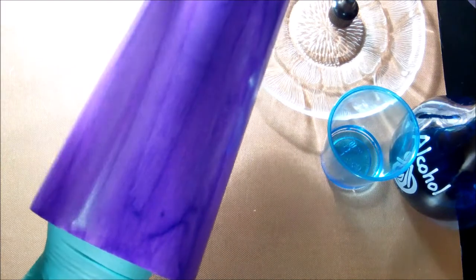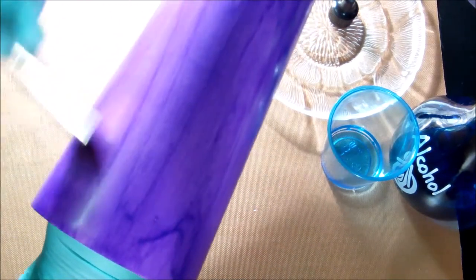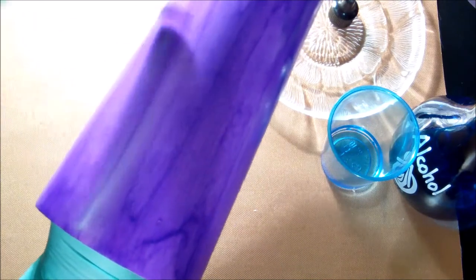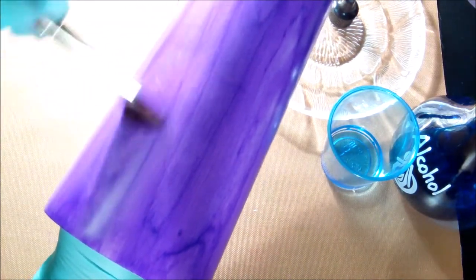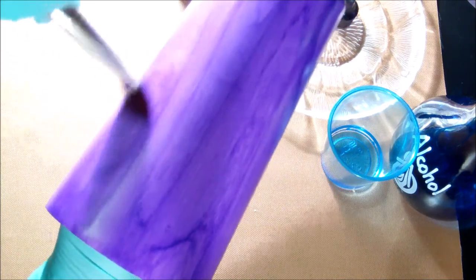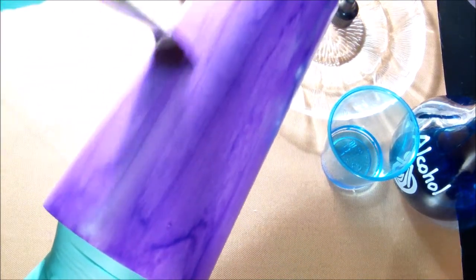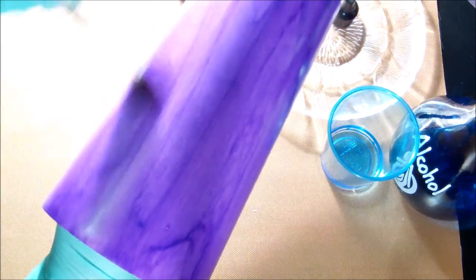If you mess up, if you don't like the way something looks, then just put some more ink on there. Because when you put the ink on top of the ink that's underneath it, it just kind of erases it. And you have a blank slate to start over again.